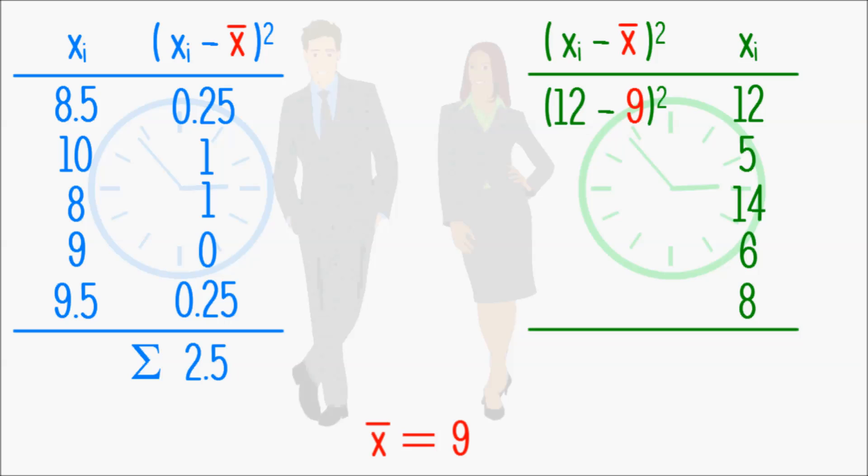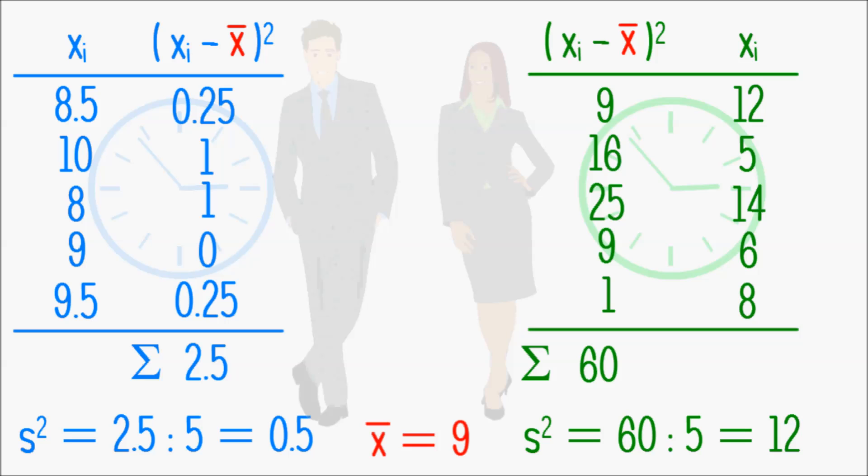The remainder of the calculation is exactly what we've done before. We sum everything up and divide by the number of values. For Patrick we find that the variance is 0.5 and for Anna it is 12. And again we can see there is more variability in Anna's working hours than there is in Patrick's.